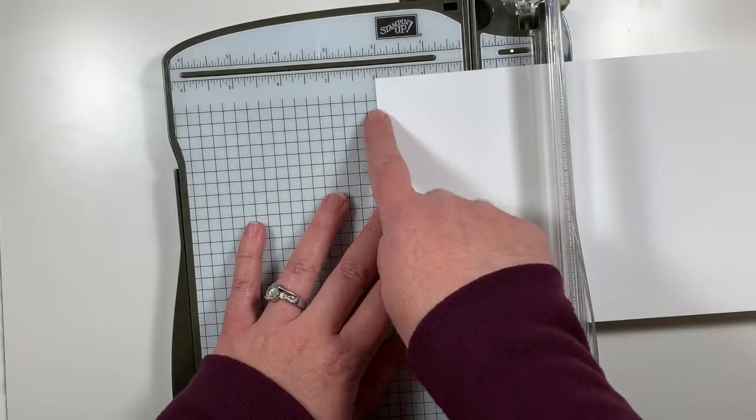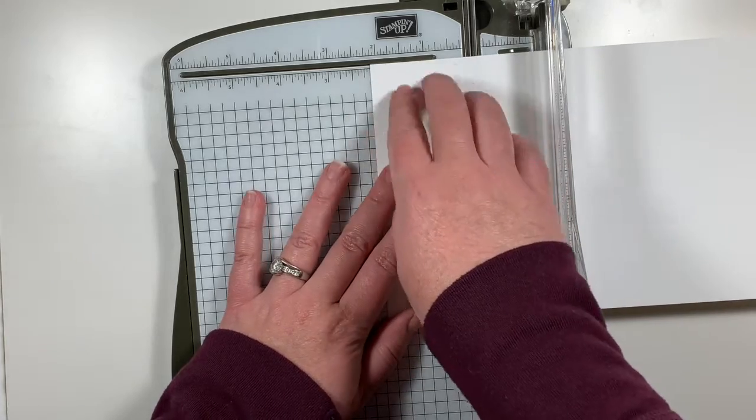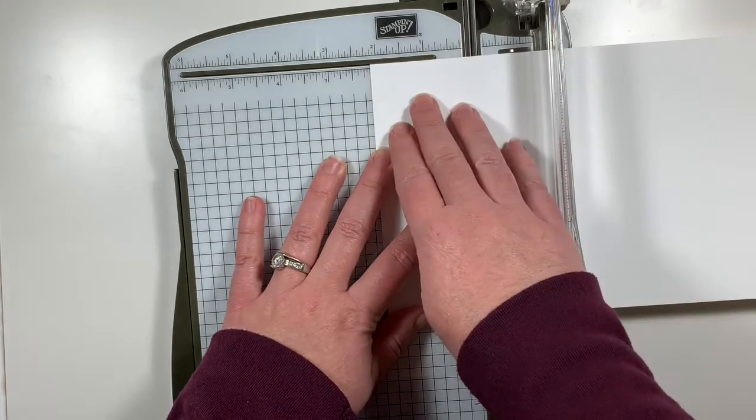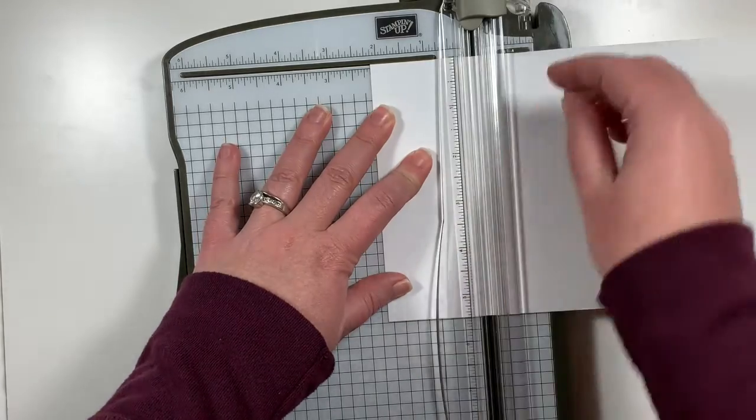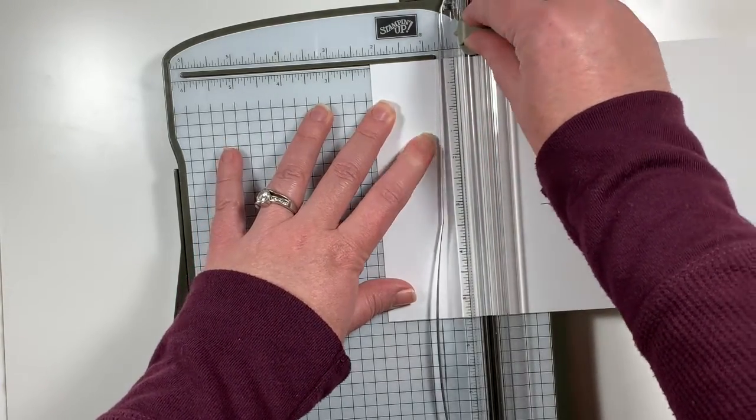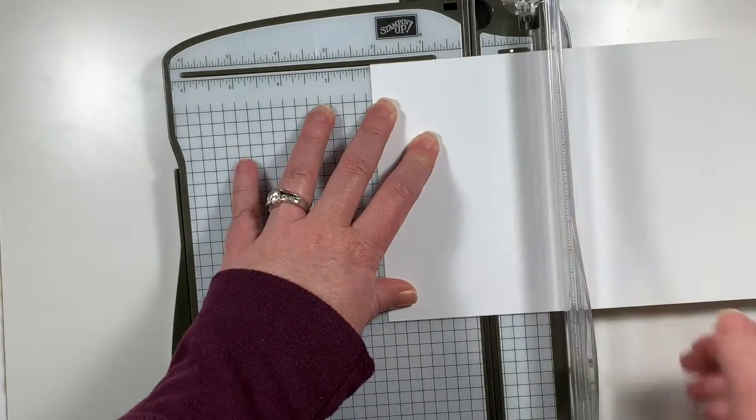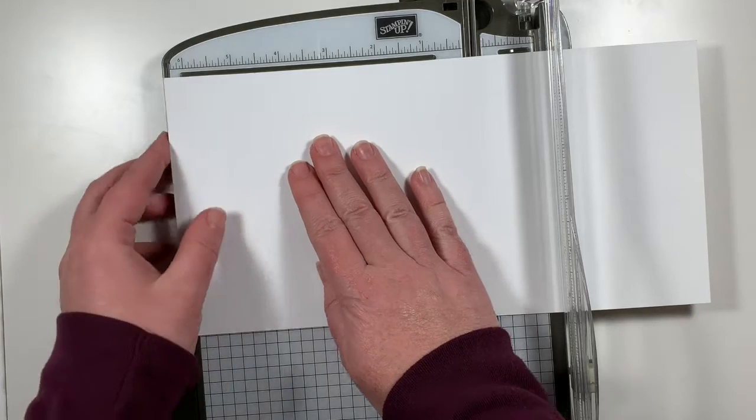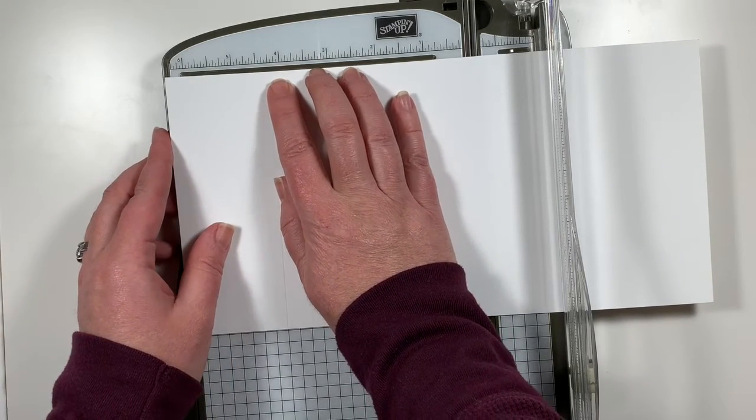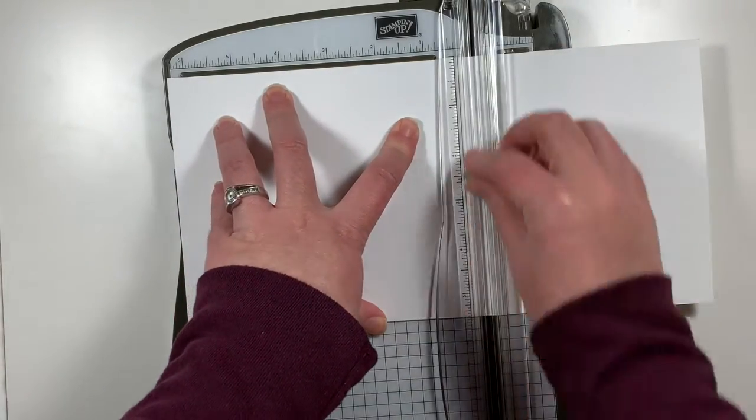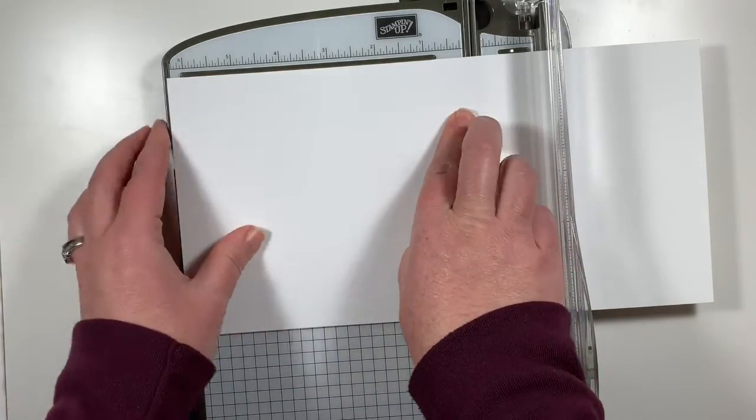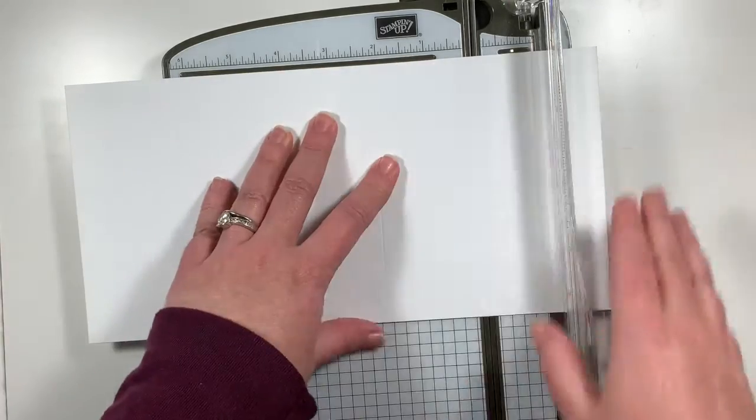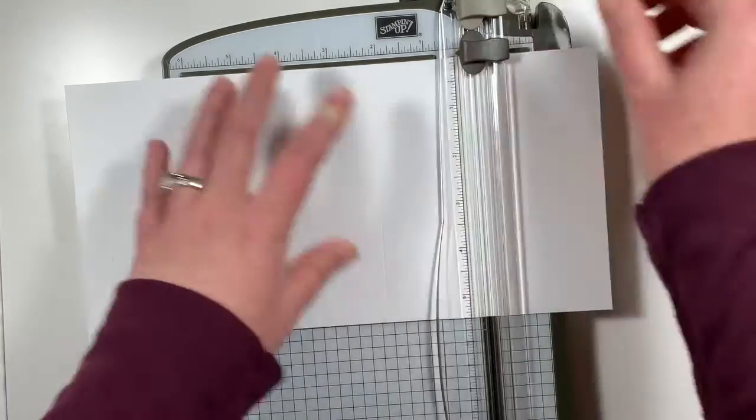I'm going to scoot it all the way over so that I'm lining the left edge of my cardstock up with the two and one eighth inch mark on my trimmer. So that's the second tick mark past the two on the left. So I'm going to score with the scoring blade on my Stampin' Trimmer and then I'm going to scoot that over until the score line that I just made lines up with the four and a quarter inch mark. Then I'm going to score it again and now that score line is going to match up with the two and an eighth inch mark. And instead of scoring, I'm going to cut it this time.